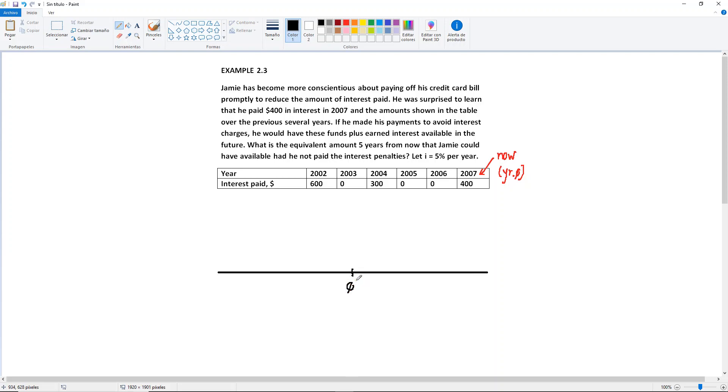And Jamie wants to know the equivalent amount five years from now. So you're going to have year one, year two, year three, year four, and year five. So Jamie is looking for a future amount. So let's just say that our future amount, it's going to be here. And this will be our unknown.